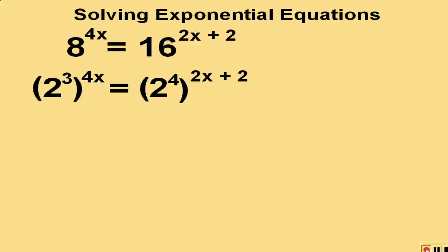We will then multiply the exponents. 3 times 4x is 12x. And multiplying 4 through 2x plus 2, we get 8x plus 8.